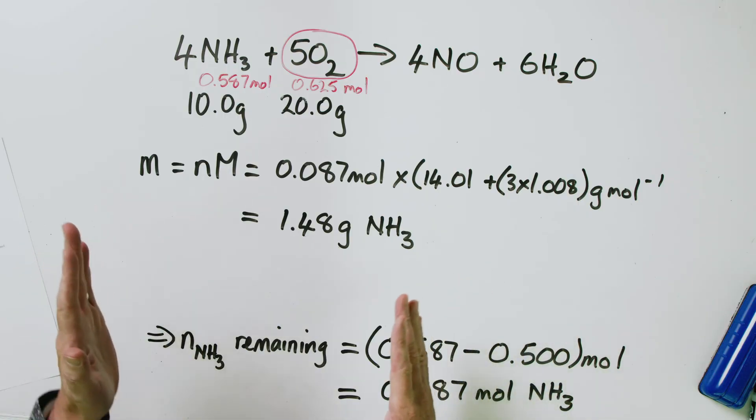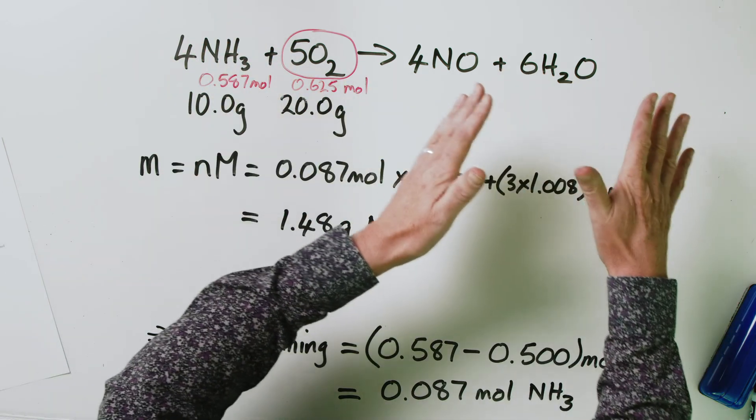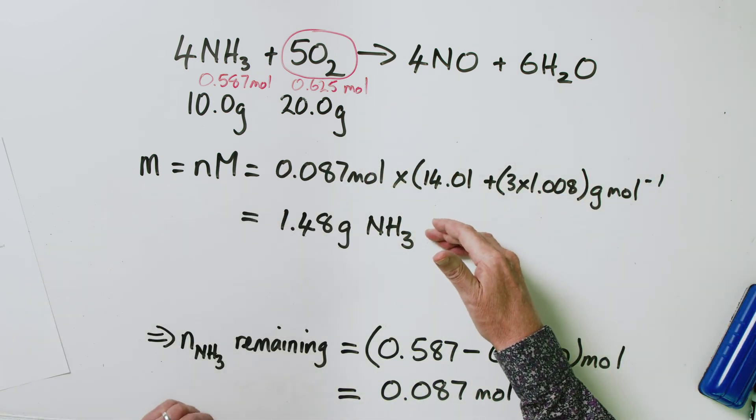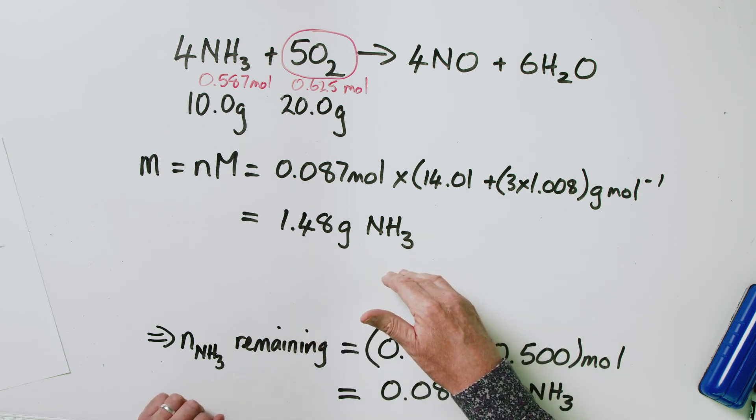That's the kind of problem you could reasonably expect in a final exam — detailed stoichiometry with limiting reagents. To summarize: starting with 10 grams of ammonia and 20 grams of oxygen, we get 15.0 grams of NO, 13.5 grams of water, and 1.48 grams of ammonia left over. There's a lot to take in, so if you're not getting it first up, just rewind and work through it again. I hope you've learned a bit about limiting reagents today — see you next time.